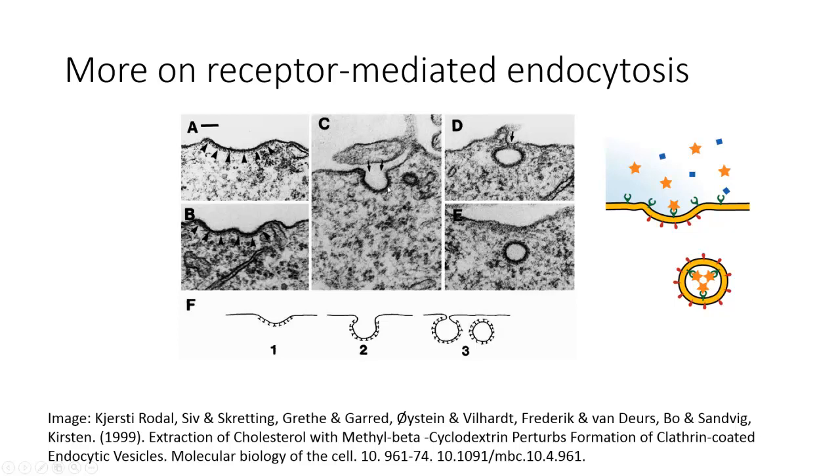Once the receptors on the extracellular surface of the pit are full, clathrin will initiate vesicle formation via endocytosis. The clathrin will cause the pit to dip in like this, the ends of the pit will fuse together, and you end up with this clathrin-coated endocytic vesicle. This is a really good way for the cell to not waste the energy it takes to do endocytosis by ensuring that the vesicle is going to be full of whatever it is we're trying to get.